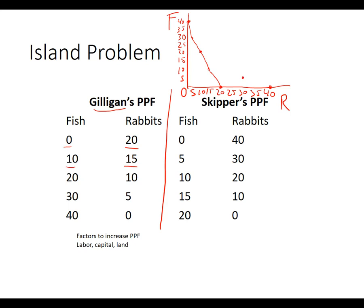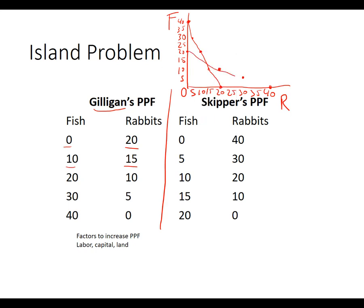Skipper can catch ten fish and twenty rabbits, then fifteen fish and ten rabbits, and finally twenty fish and zero rabbits. So here is Skipper's production possibility frontier. If you just eyeball this, what should happen? Skipper is pretty good at catching rabbits, so the best these two can do is have Skipper catch only rabbits — we get forty — and have Gilligan catch only fish.